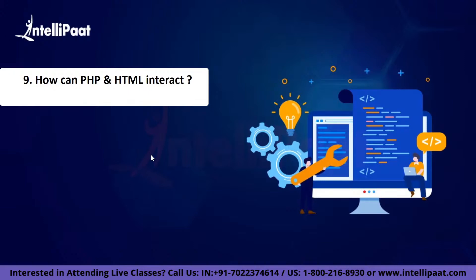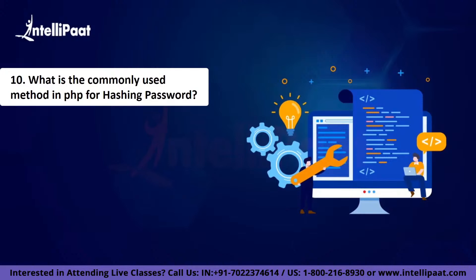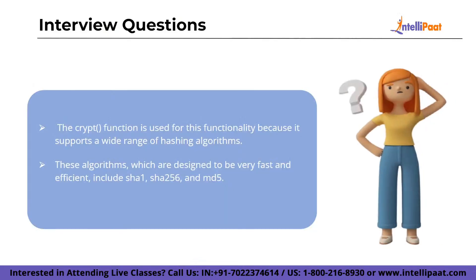Now let's discuss our final question: what is the commonly used method in PHP for hashing passwords? The crypt function is used for this functionality. It supports a wide range of hashing algorithms. These algorithms, which are designed to be very fast and efficient, include SHA-1, SHA-256, and MD5.